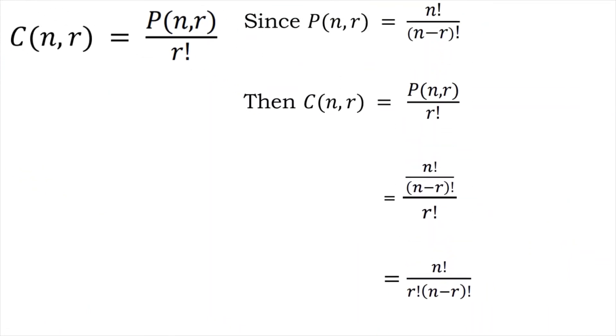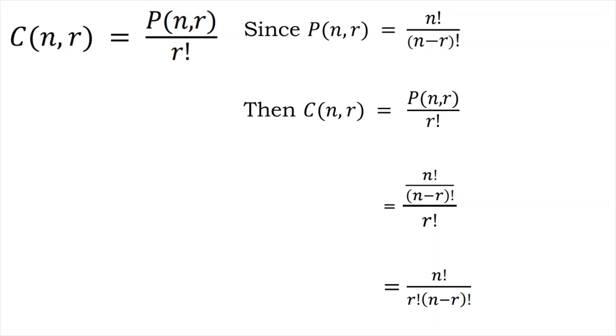Since we know that P(n,r) equals n factorial divided by (n minus r) factorial, and C(n,r) equals P(n,r) divided by r factorial, we can now substitute this value, giving us n factorial divided by (n minus r) factorial over r factorial. By simplifying it further, we finally have the formula C(n,r) equals n factorial divided by r factorial times (n minus r) factorial.